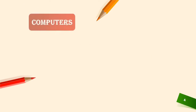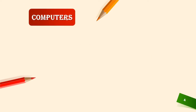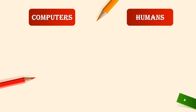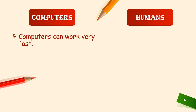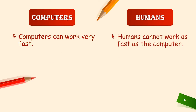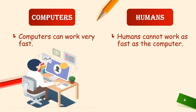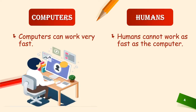Now let's see the difference between computers and human beings. The first difference: computers can work very fast. Computers can do the work very fast, but human beings cannot work as fast as the computer.